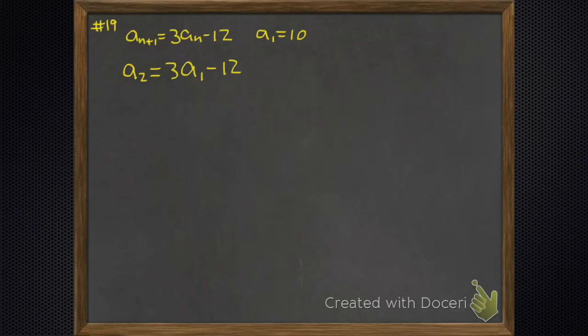So we go and we find a_2. a_2 is three times a_1 minus 12. But a_1 was 10. So we put that in there and we clean it up and we find out that's 18.